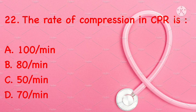The rate of compression in CPR is: 100 per minute, 80 per minute, 50 per minute, or 70 per minute. Correct answer is A: 100 per minute.